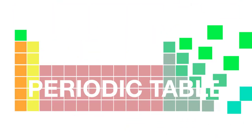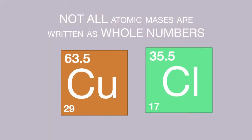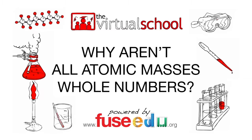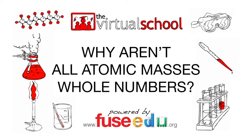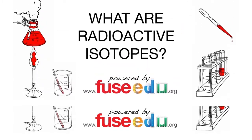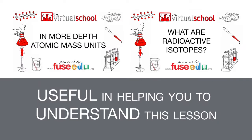As you look through the periodic table, you may have noticed that not all atomic masses are written as whole numbers. This lesson looks at why some elements don't have whole number atomic masses in the periodic table. You may find the lessons on atomic mass units and what are radioactive isotopes useful in helping you to understand this lesson.